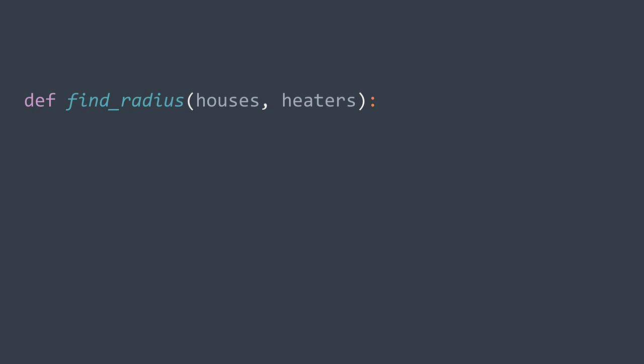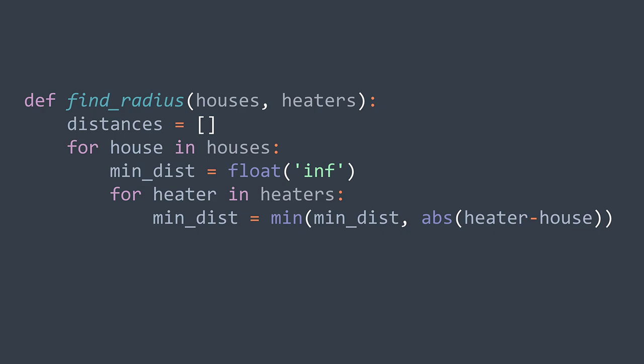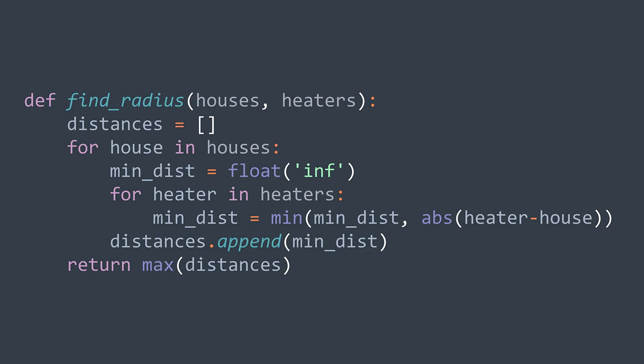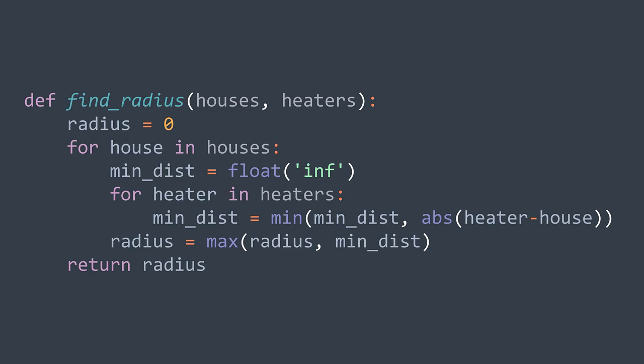In code, we create an array 'distances' where for each house we calculate the distance between it and its closest heater and add it to the array. We create a variable min_dist initialized to infinity, then for each heater, min_dist becomes the minimum between itself and the absolute distance between the current house and the current heater. After the inner loop we return the maximum distance, which represents the smallest possible radius. We can also track the maximum value — the radius — while traversing houses to avoid storing the distances array.